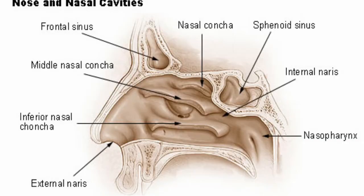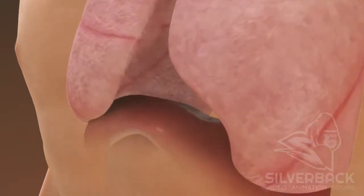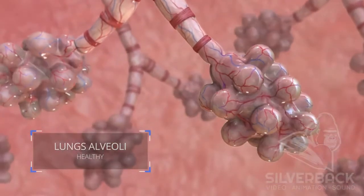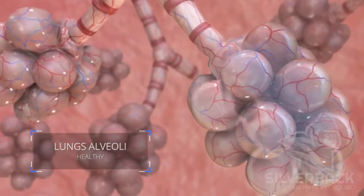Divided by the septum, the body has two nasal cavities that are lined with mucous membranes. The nasal cavities are hollow spaces designed to filter and warm the air, increasing the amount of water vapour present before it passes through into the lungs. Making the air moist and humid is required, as dry air can harm the delicate tissue found in the lungs.